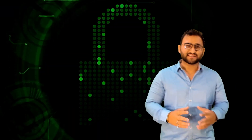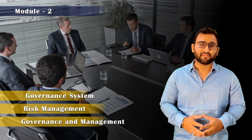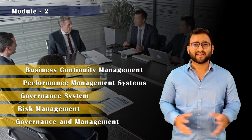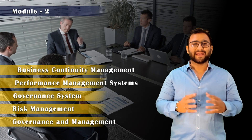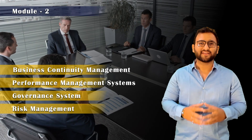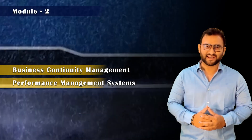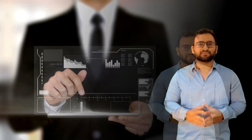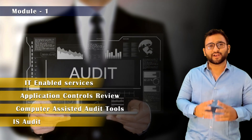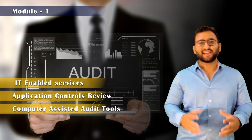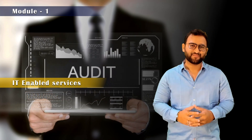After that, you will go to Module 2, which covers governance and risk management. You will learn how to manage the organization's IT department and information systems. Finally, you will go to Module 1, where you learn the whole process of auditing an information system.